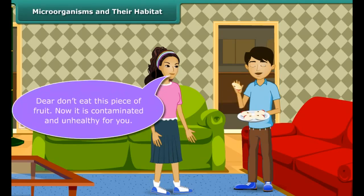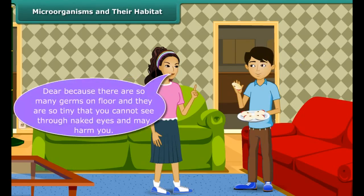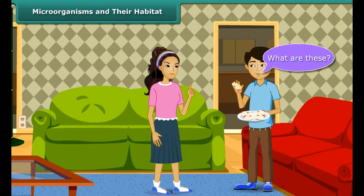Dear, don't eat this piece of fruit — now it is contaminated and unhealthy for you. But why? Because there are so many germs on the floor, and they are so tiny that you cannot see them through naked eyes, and they may harm you. What are these?